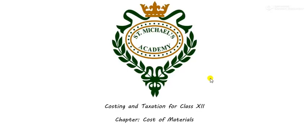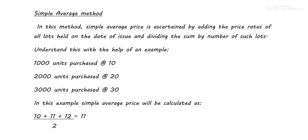In costing and taxation for class 12, we were continuing the chapter on cost of materials. We had already discussed two methods for valuing the cost of materials: the FIFO method and the LIFO method. In today's class we'll be starting a new method — the Simple Average Method. I haven't yet received the previous homeworks from many of you, so please send it as soon as possible.